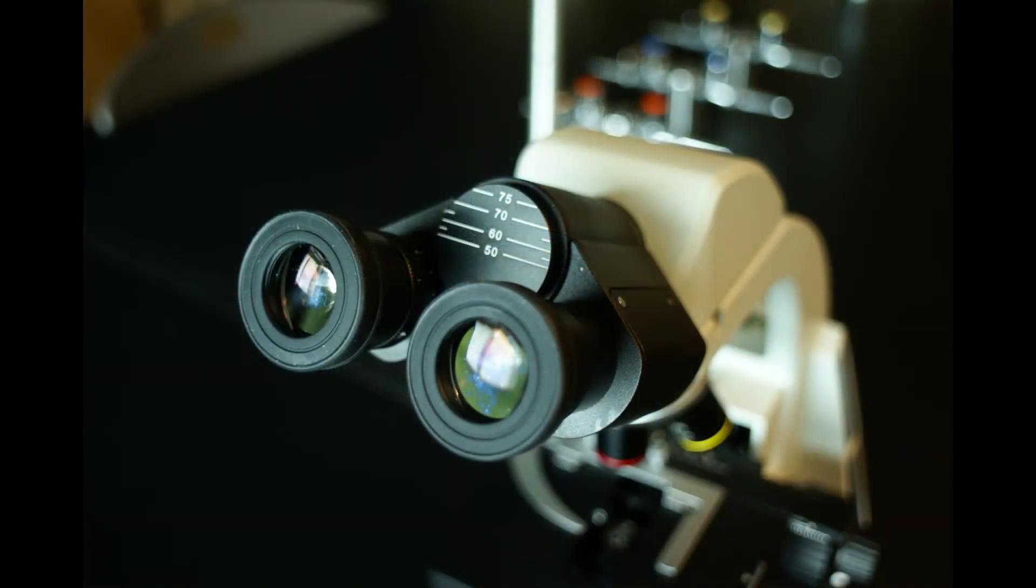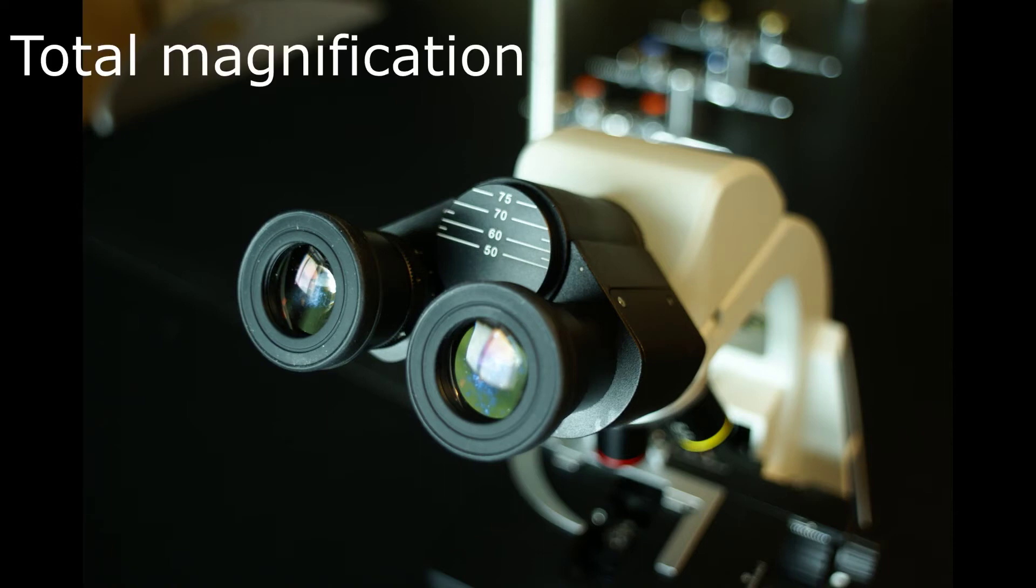The oculars also magnify the image an additional ten times. So, your total magnification will always be the objective lens times the ocular lens. Thus, with a 4x scanning lens, the total magnification is 4 times 10, which equals 40.